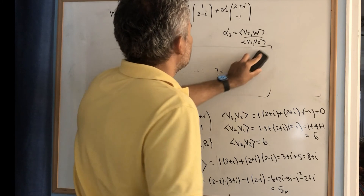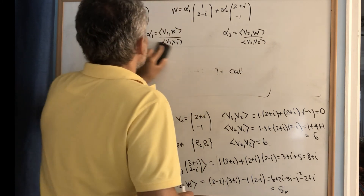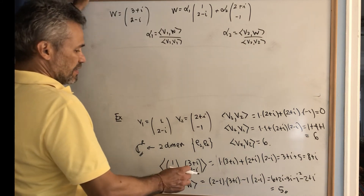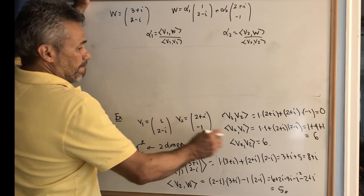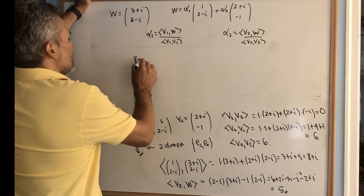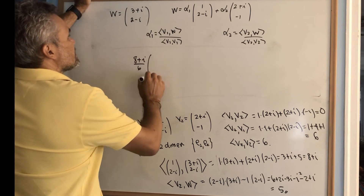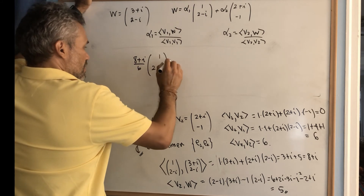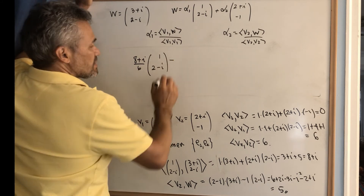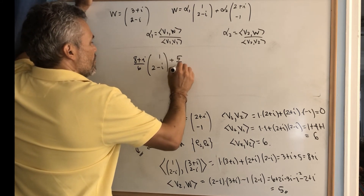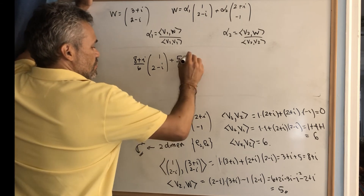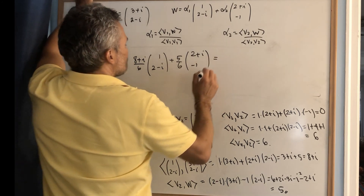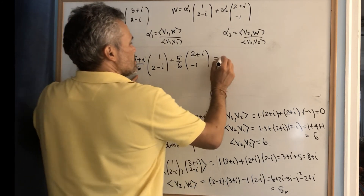That means we can write w as (5/6)·v₁ + (5/6)·v₂... specifically α₁ = 5/6 times b₁ plus the corresponding alpha for b₂. Let's verify by factoring out 1/6.